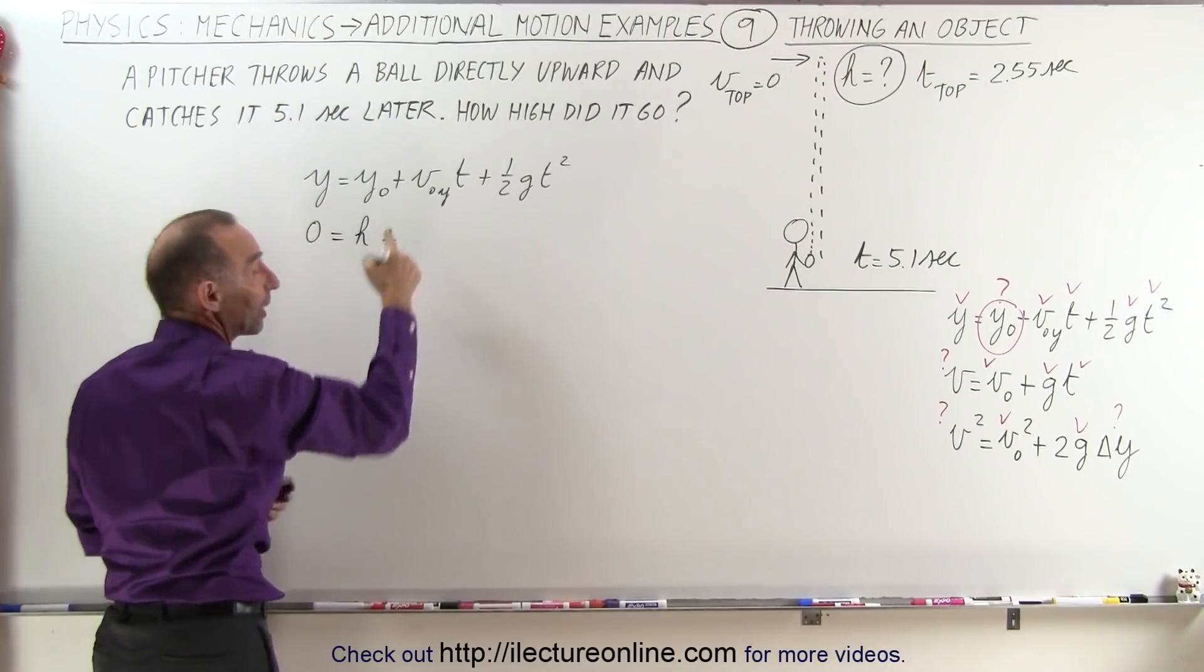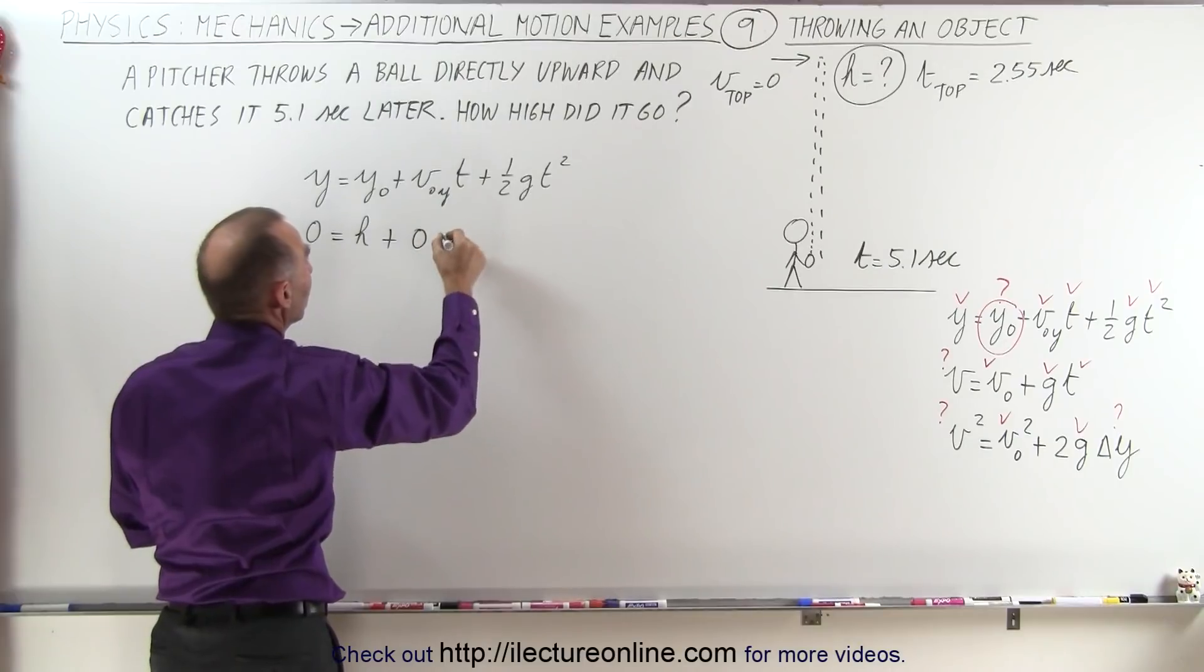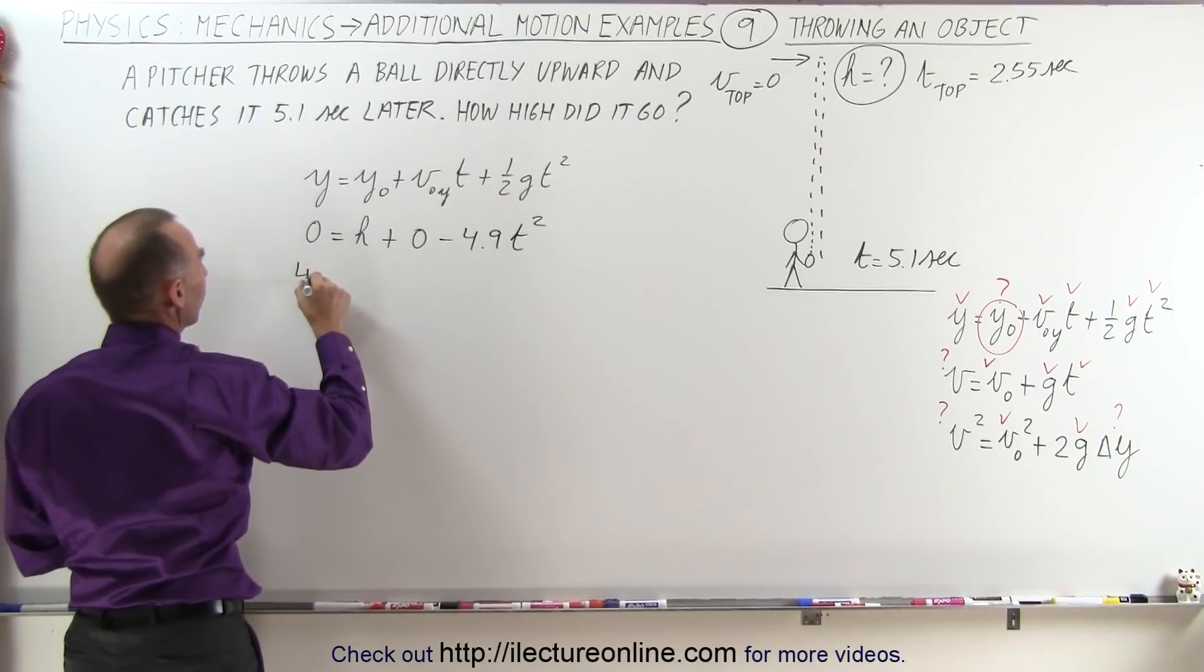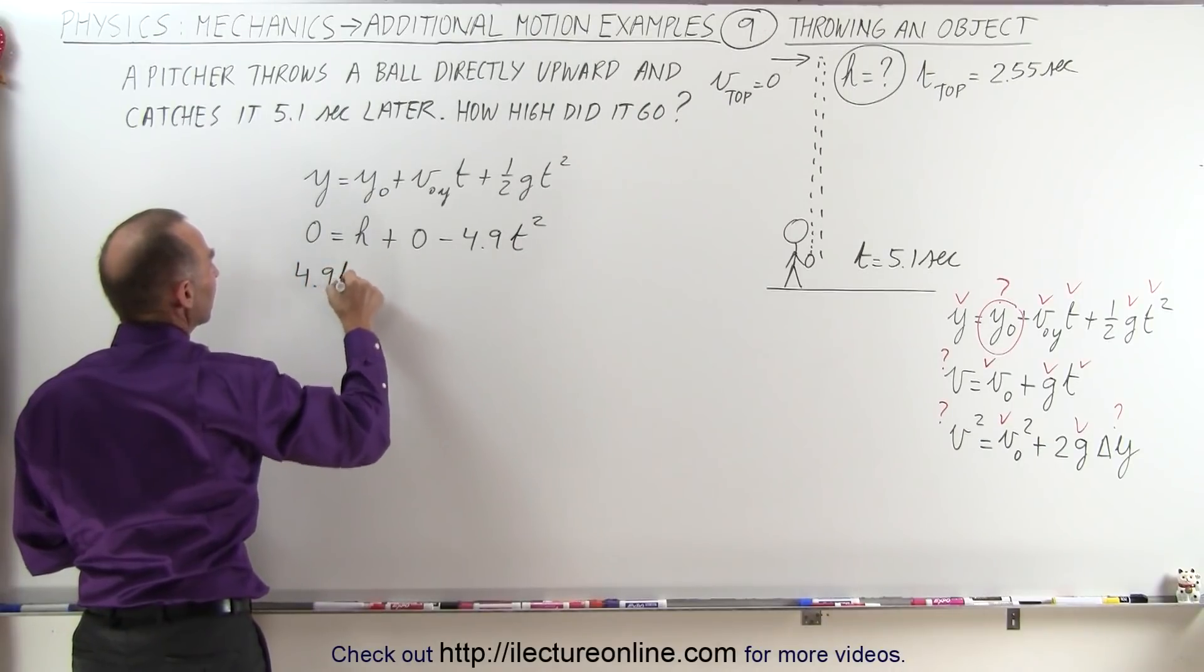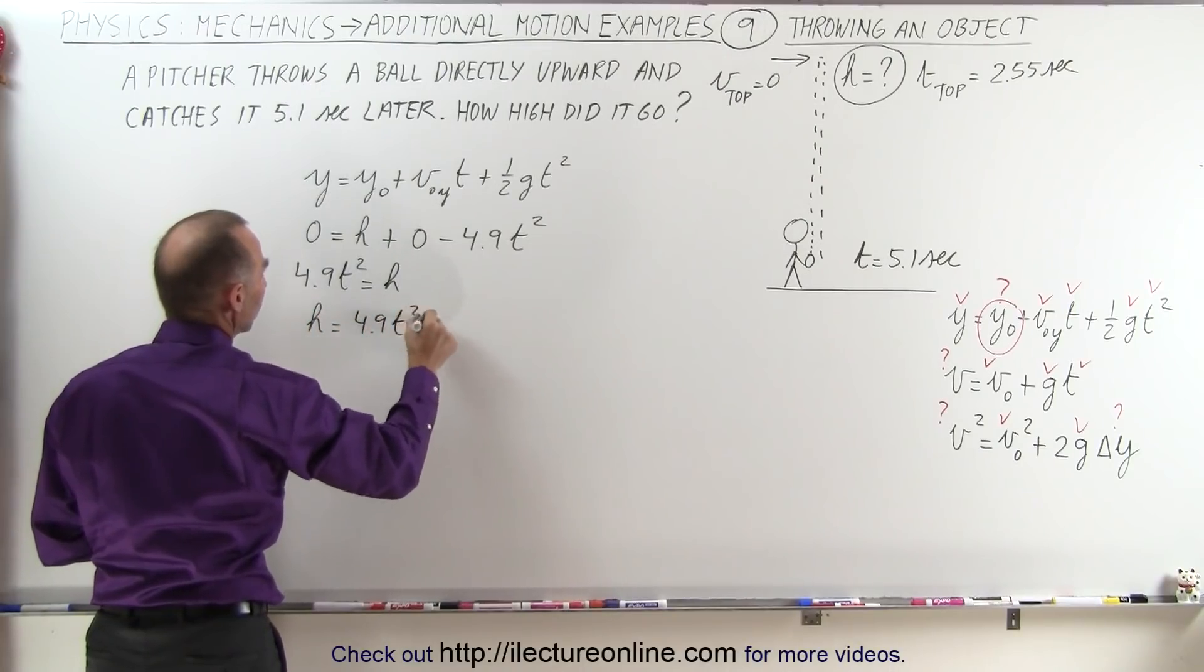The initial velocity in the y direction, remember the initial velocity is at the top, that would be zero, and this would be minus 4.9 t squared, which means 4.9 t squared is equal to h, or h is equal to 4.9 t squared.